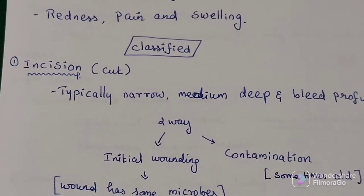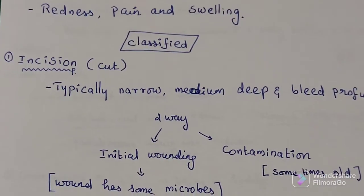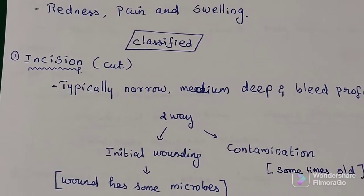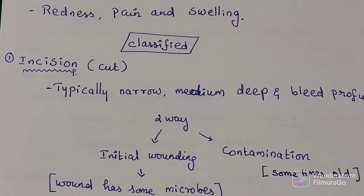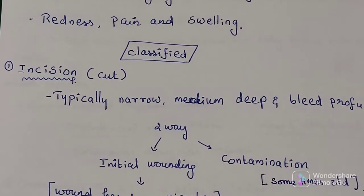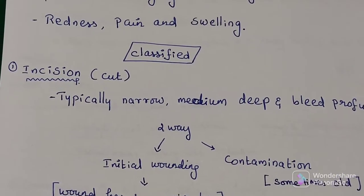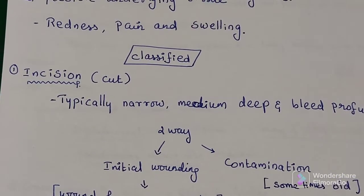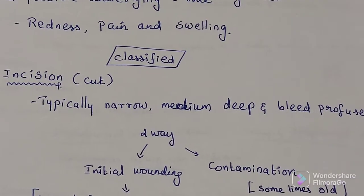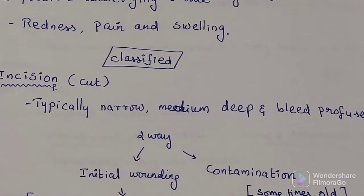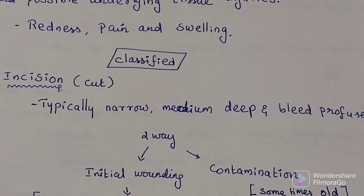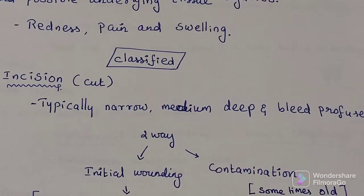Wounds can be classified into several types. The first one is an incision — a fancy name for a cut. It is typically narrow, medium-depth, and bleeds profusely.